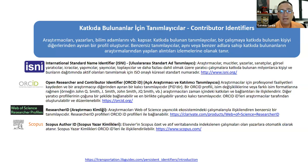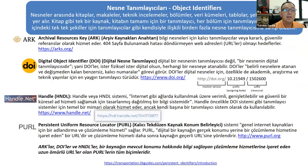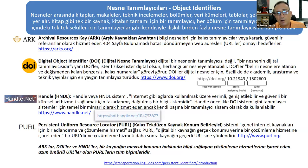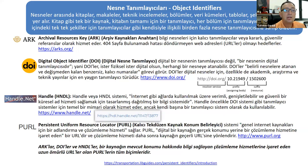ORCID ID almak bireysel olarak ücretsizdir, ancak diğer avantajlardan yararlanmak için kurumsal üyelik gerekiyor. Makaleler, tezler, raporlar ve kitap bölümleri gibi araştırma varlıkları için ise ARK, DOI, Handle.Net ve PURL gibi yaygın kullanılan kalıcı tanımlayıcılar mevcut. Bunların bir kısmı tamamen ücretsiz, bir kısmının ise ciddi bir abonelik ücreti var. Şu anda Türkiye'deki arşivlerin neredeyse tamamı Handle.Net kullanıyor; Türkiye'deki dergilerin tamamı ise DOI kullanıyor.